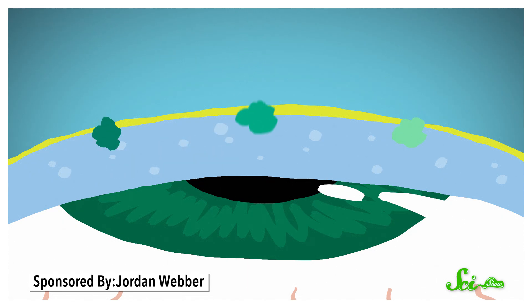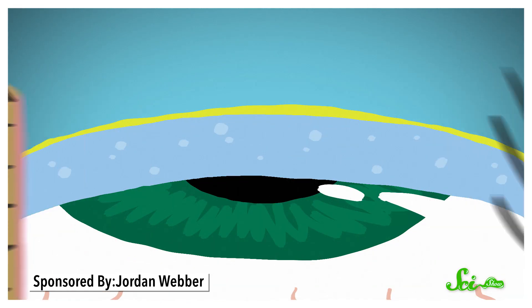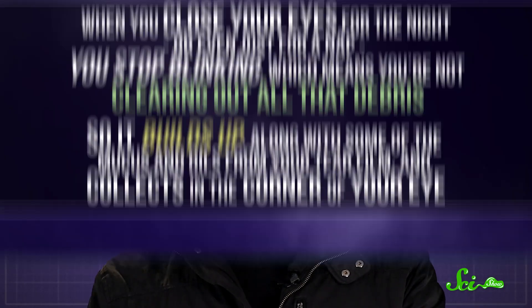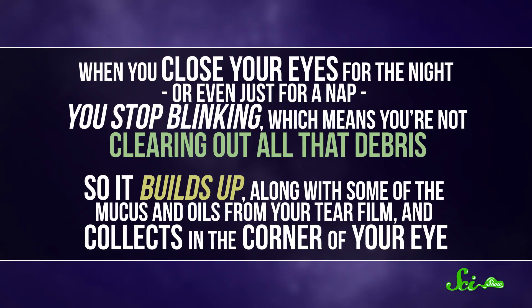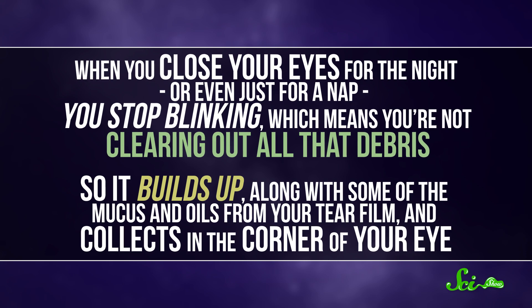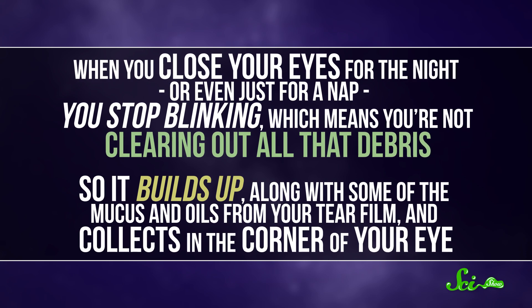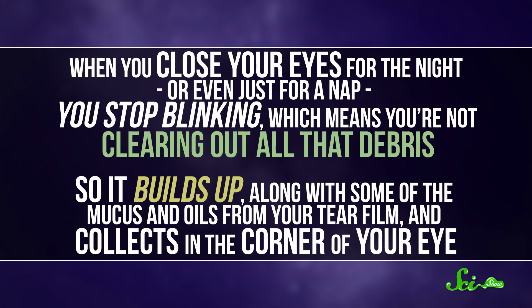Normally, when you're awake, any crud that gets into your eye is washed away by this tear film whenever you blink. Your eyelids are a lot less active when you're asleep, though. When you close your eyes for the night, or even just a nap, you stop blinking, which means you're not clearing out all that debris. So it builds up, along with some of the mucus and oils from your tear film, and then it collects in the corner of your eye.